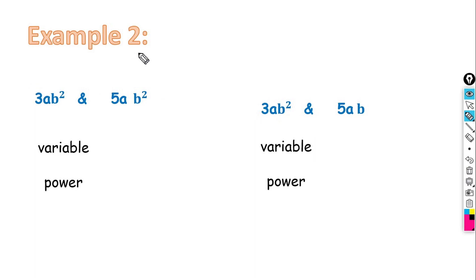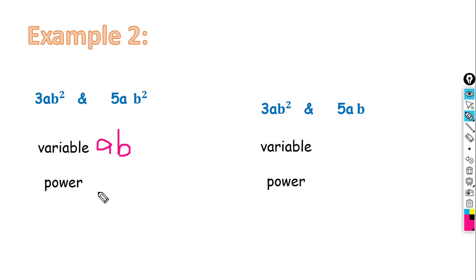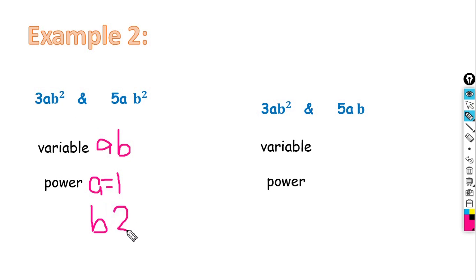Now let's look at Example 2: the terms 3AB² and 5AB². Are these like terms? Both of them have the same variables A and B. The power of A is 1 for both the first and second terms. The power of B for the first term is 2, and the power of B for the second term is also 2. So we can consider these as like terms.